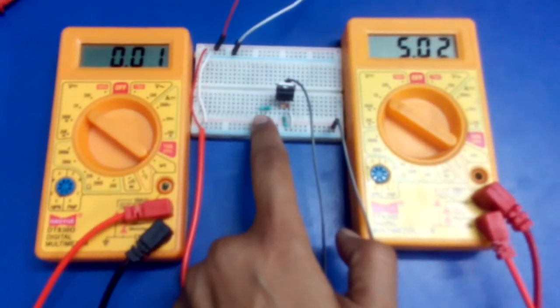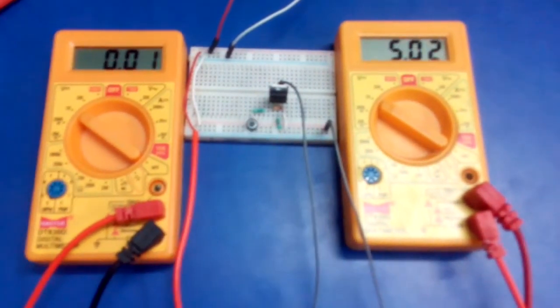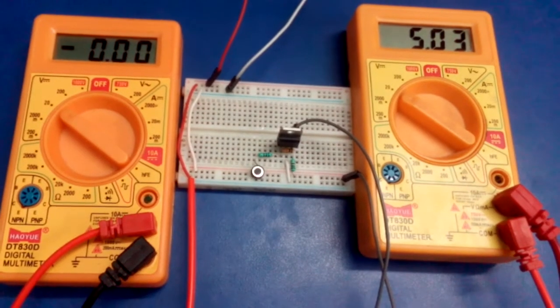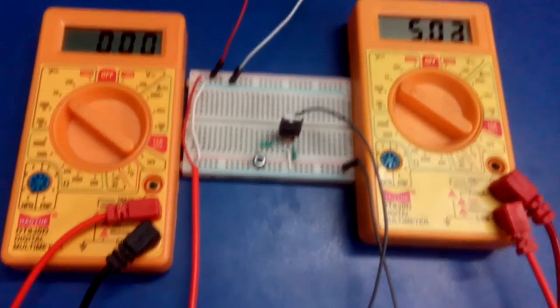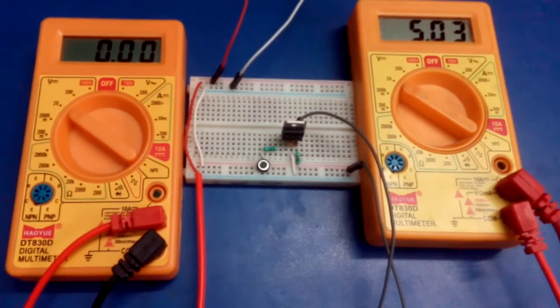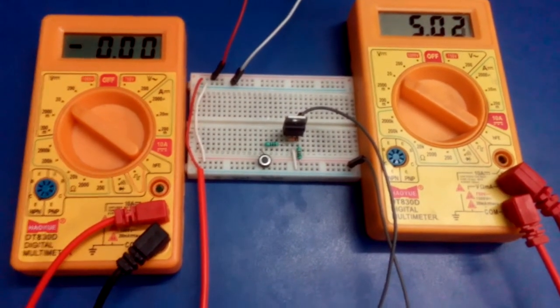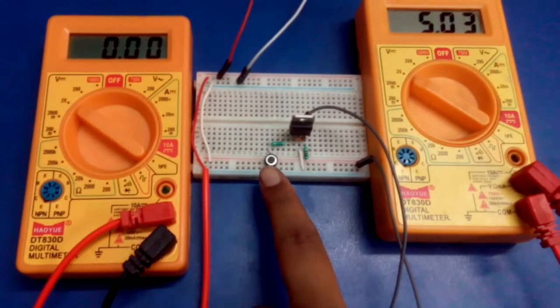Now I have changed the circuit from low side to high side and the load is now connected between ground and source of the MOSFET.